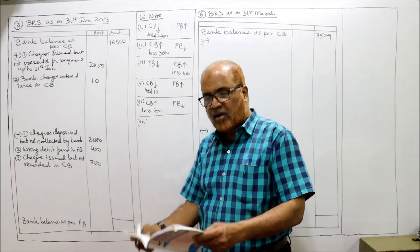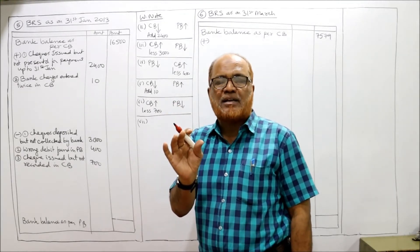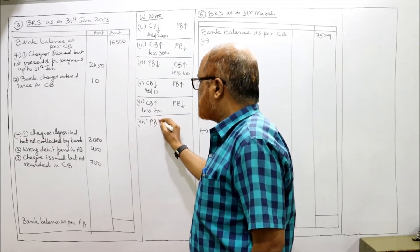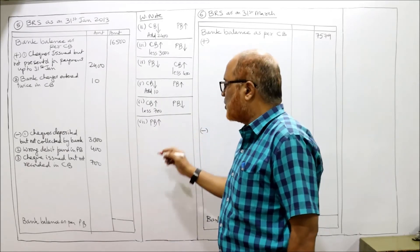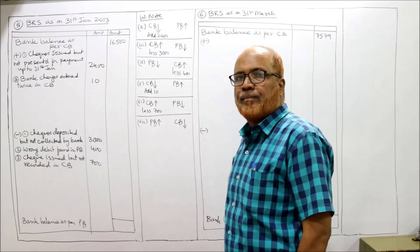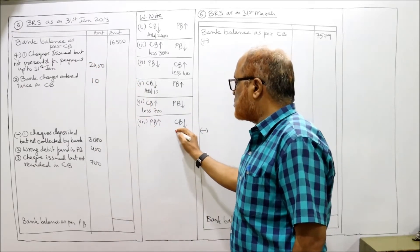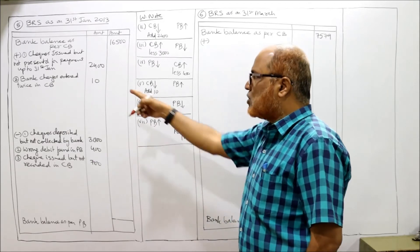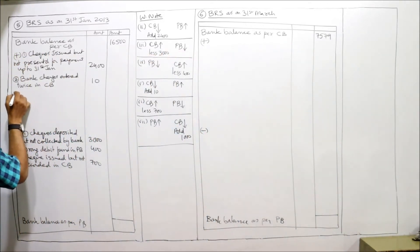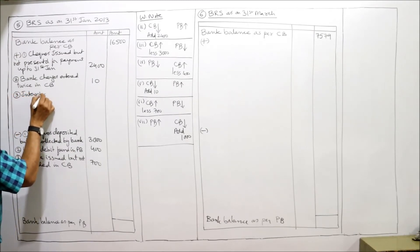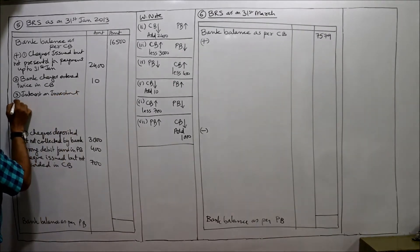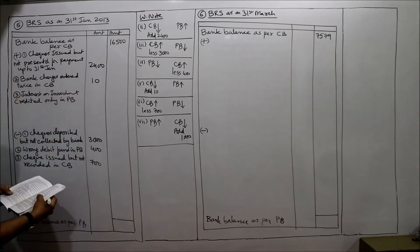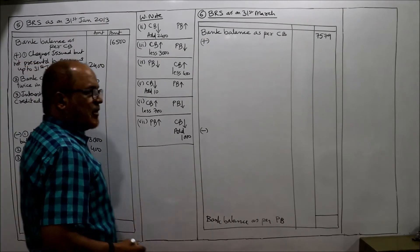Seventh item: interest on investment of rupees 1000 was collected by the bank but not recorded in the cash book. The pass book balance increases because the banker collected the interest. The cash book shows less balance since it was not recorded there. Our starting point, the cash book, shows less balance, so we add. Add: interest on investment credited only in pass book — rupees 1000. Seventh item completed.